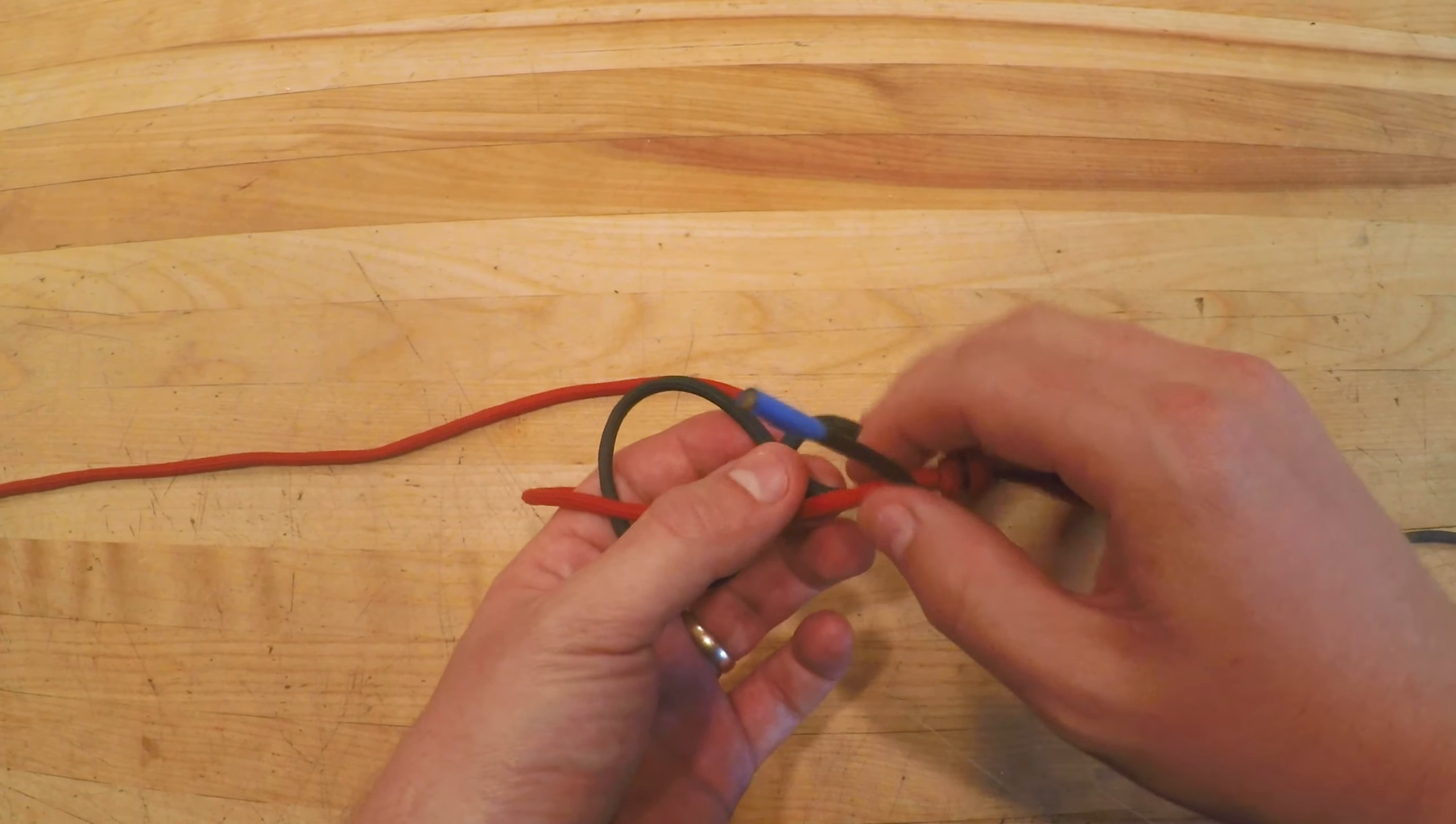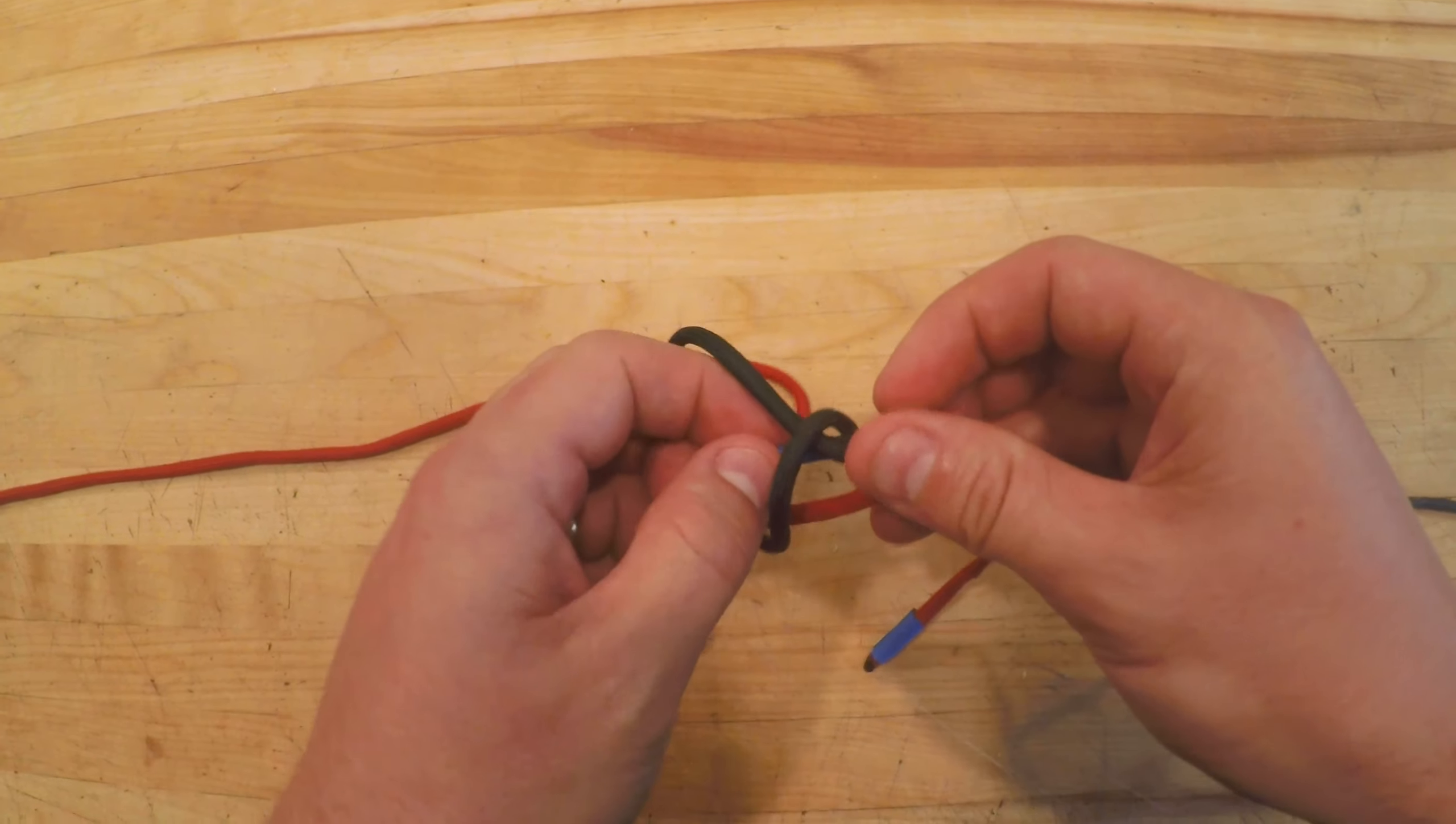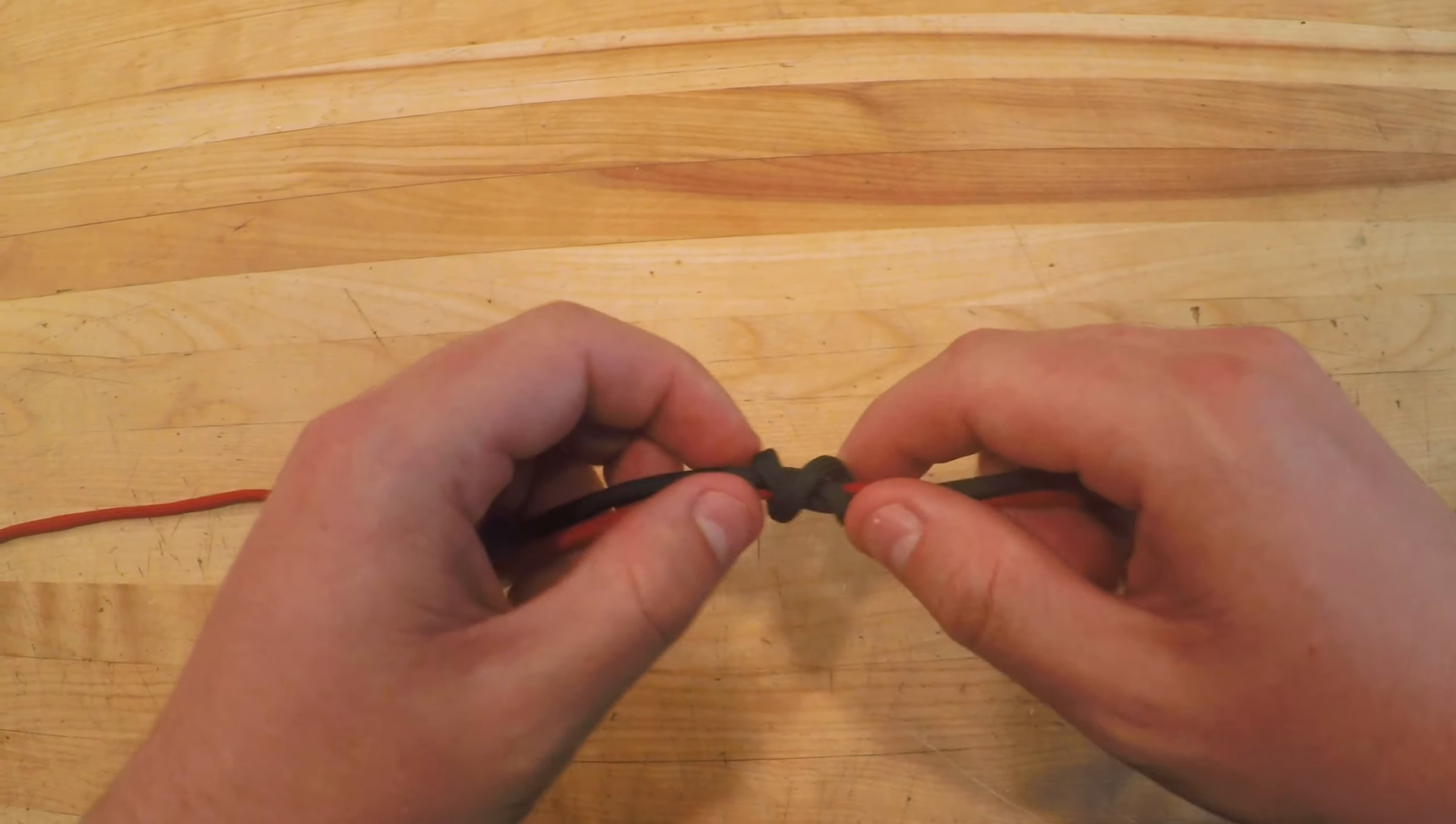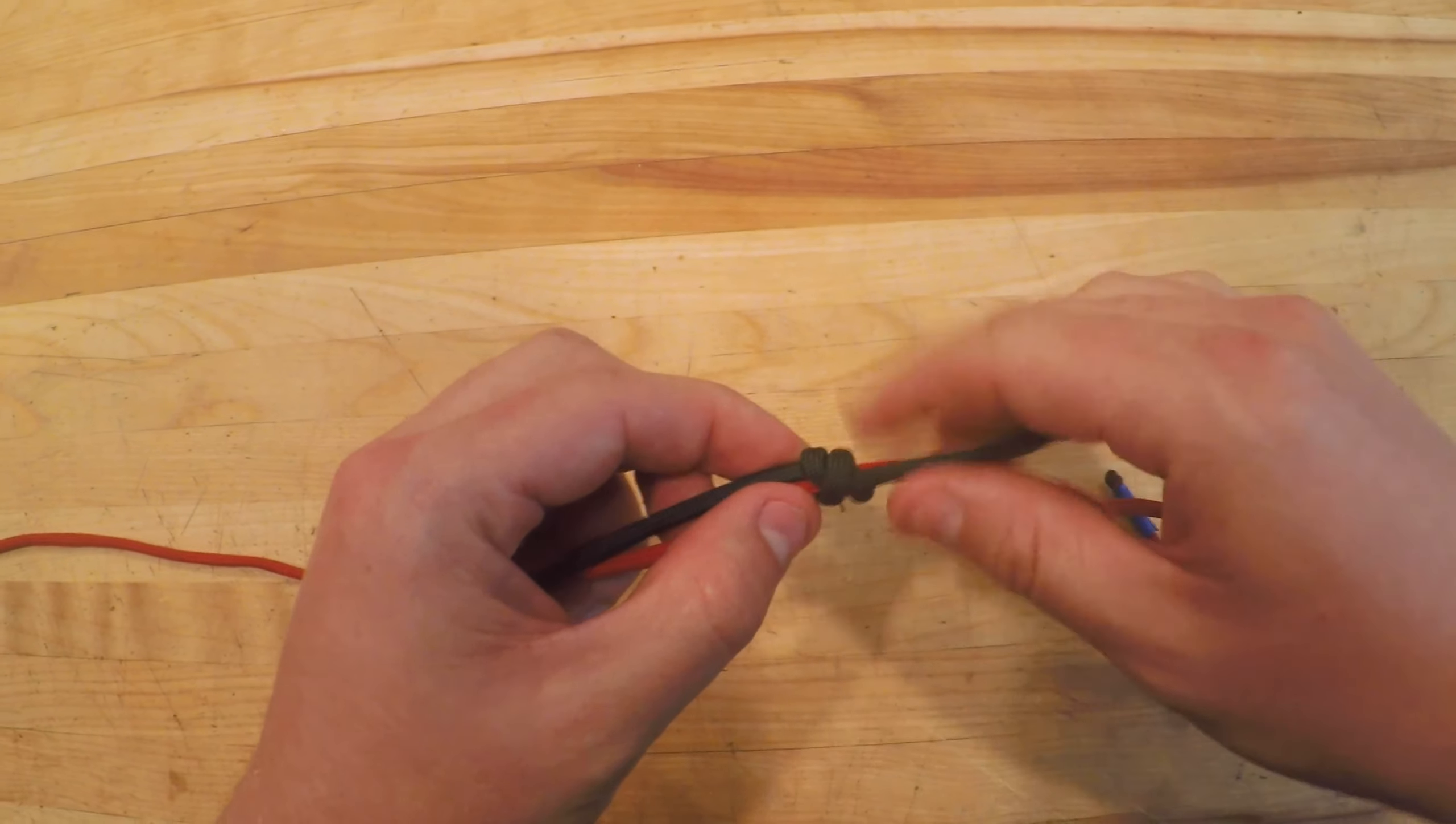Lastly I'm going to take my working end, pass it through the first loop, underneath the X, and out the second loop, and then tighten. And again you'll notice if done properly it cinches down to a nice neat X.